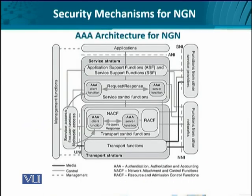This overall architecture shows the transport stratum and the service stratum. At the transport stratum, we have the network attachment control function with AAA client and AAA server functions at the same network element. Similarly, at the service stratum, the client and server functions are incorporated at the service control function. The request-response interaction takes place between these two, likely on the same network element.